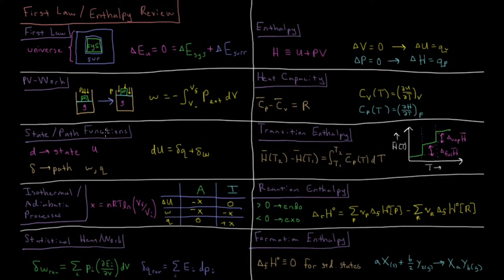We can define state and path functions in terms of whether or not they depend on the path in which it took to create a thermodynamic state. Things like internal energy U are state functions because they do not depend on how you got there. They only depend on what the value of your state properties are. That's indicated by an exact differential d here for our energy.